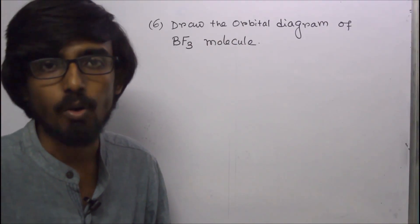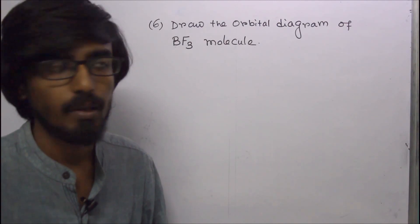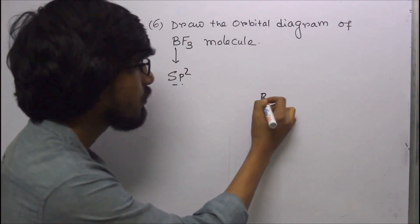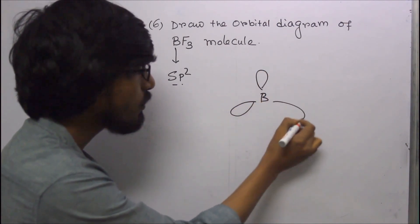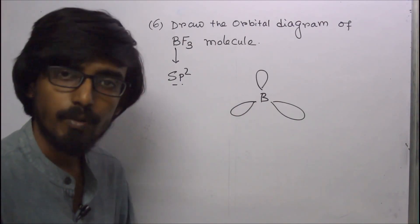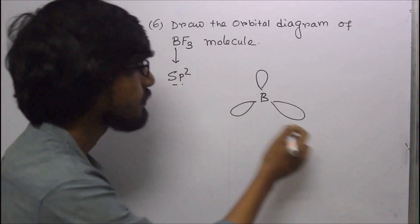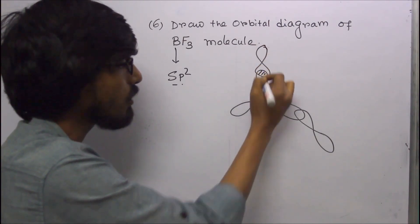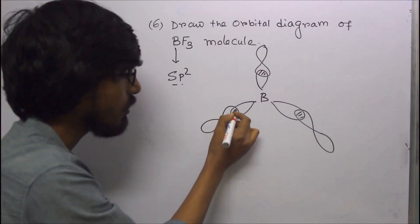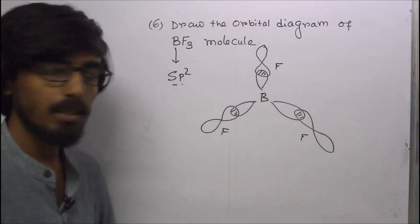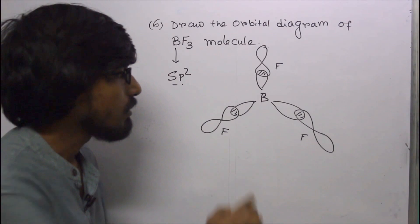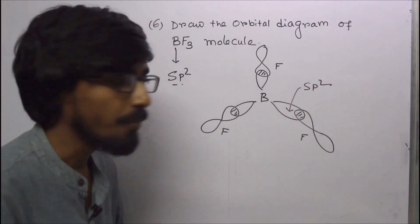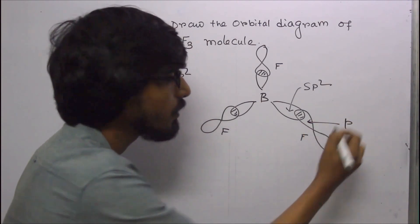Next question: draw the orbital diagram of BF3. The hybridization of boron in BF3 is sp2. Three sp2 hybrid orbitals of boron combine with three p-orbitals of the three fluorine atoms to form three sigma bonds, giving a trigonal planar arrangement.